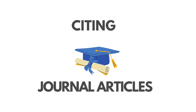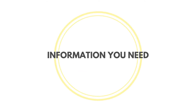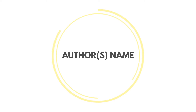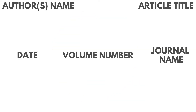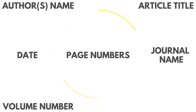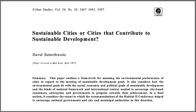Let's begin with citing a journal article. To properly cite a journal article, you will need the author's name, the title of the article, the date it was published, the title of the journal, the volume number, the page numbers the article is featured in, and finally the DOI. All of this information can be found within the article as well as the site you retrieved it from.